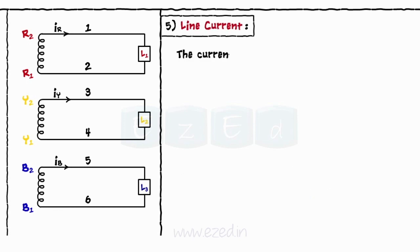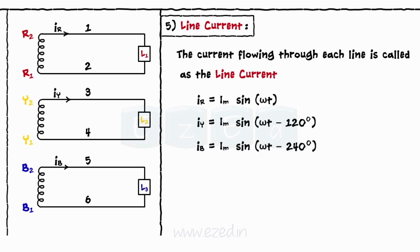The current flowing through each line is called as the line current. IR, IY, and IB are the line currents which are represented mathematically by the following equations.